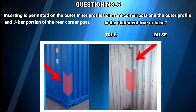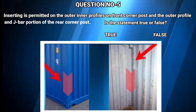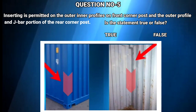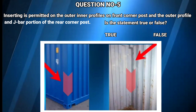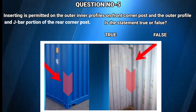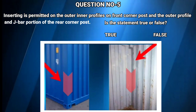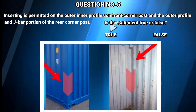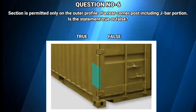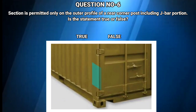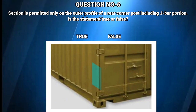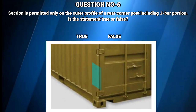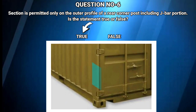Question number 5: Inserting is permitted on the outer and inner profiles on the front corner post, and the outer profile and J-bar portion of the rear corner post. Is the statement true or false? The answer is true. Question number 6: Sectioning is permitted only on the outer profile of a rear corner post including the J-bar portion. Is the statement true or false? The answer is true.